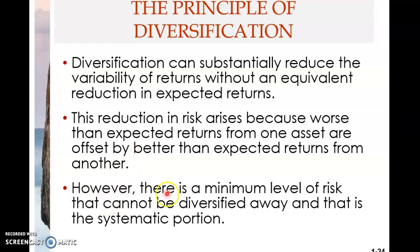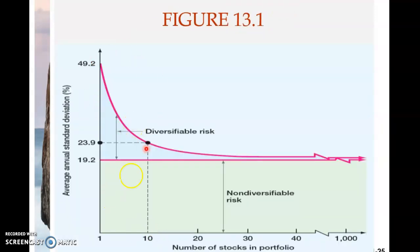However, there is a minimum level of risk that cannot be diversified away — a portion of total risk that cannot be eliminated through diversification. This portion of risk is called systematic risk. The portion that can be eliminated through diversification is called unsystematic risk, and this can be seen in the diagram here.